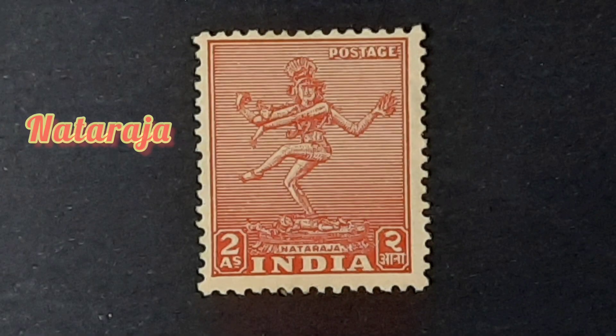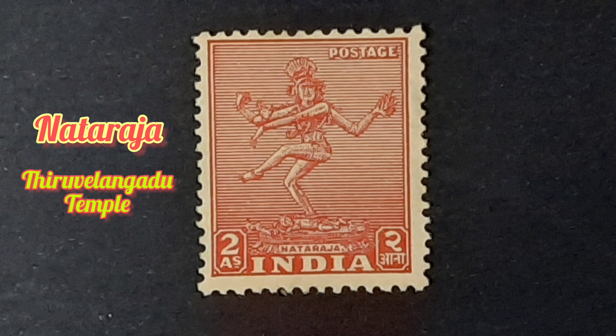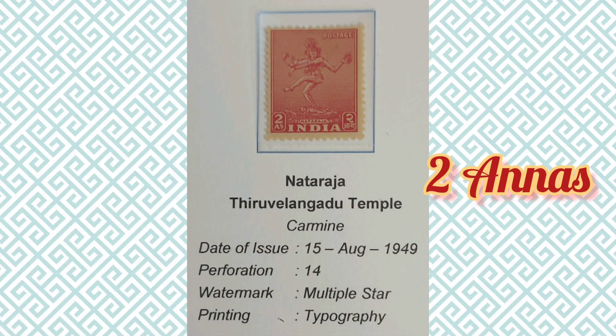The next stamp is the two anna stamp. The image depicted in this stamp is Nataraja from the Thillai Nataraja temple near Chennai. It was built by the Cholas in the 12th century AD and is known as the Ratna Sabhai, depicting one of the Pancha Sabhai of Nataraja. The philatelic information of this stamp can be found here.